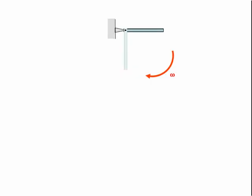As the rod swings down, its potential energy decreases and its kinetic energy increases. Since the pivot is frictionless, there is no work done by friction. Let's consider the total initial mechanical energy. We'll take the zero position of potential energy to be the initial height of the rod when it is horizontal. Therefore, the total initial mechanical energy will be just zero.